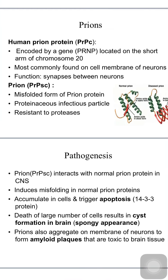In the pathogenesis of prion diseases, prions interact with normal prion protein in the central nervous system, induce misfolding, and accumulate within neurons to trigger apoptosis, aided by intracellular protein 14-3-3. Death of large numbers of cells results in cyst formation in the brain, giving it a spongy appearance. They also aggregate on neuron membranes to form amyloid plaques, which are toxic to brain tissue.